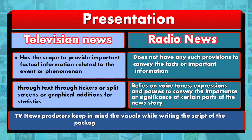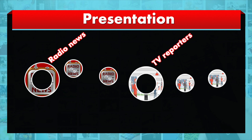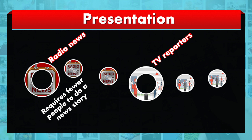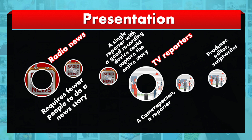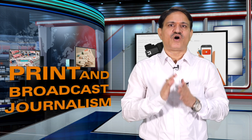TV news producers keep in mind the visuals while writing the script of a package story or for voiceovers. Another difference is that radio news requires fewer people to do a news story — even a single reporter with a suitable recording device could capture it. In contrast, TV reporters would require a camera person, a reporter, producer, editors and script writer.